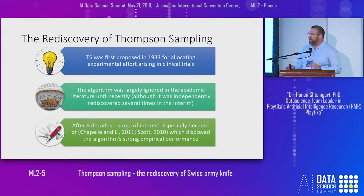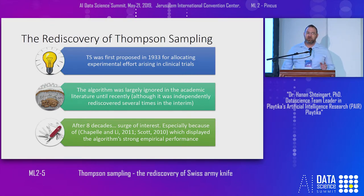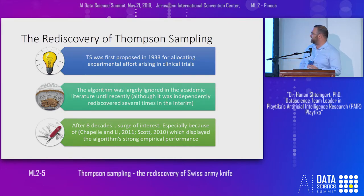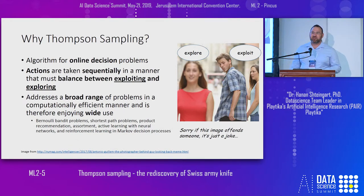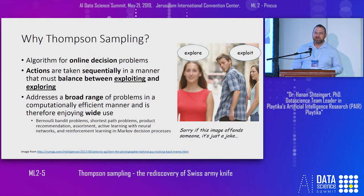Thompson Sampling was invented more than 80 years ago in 1933, and it was mainly ignored for the last 80 years. But recently it became very popular in many fields due to some very substantial papers which show that it really works. So why do we need some sampling? Life is much more interesting than supervised learning.